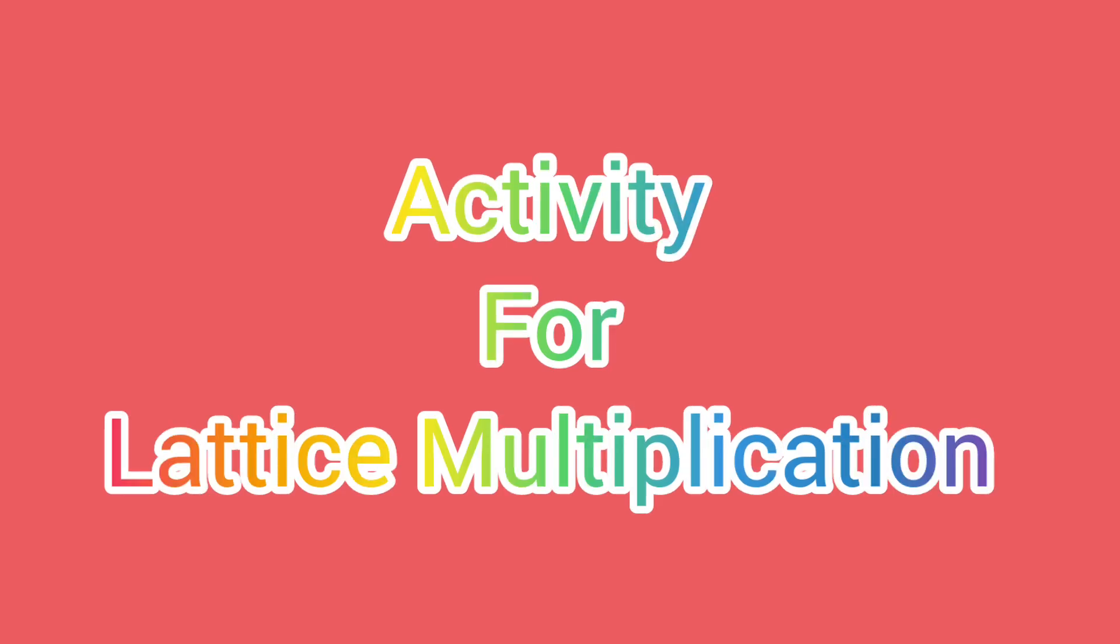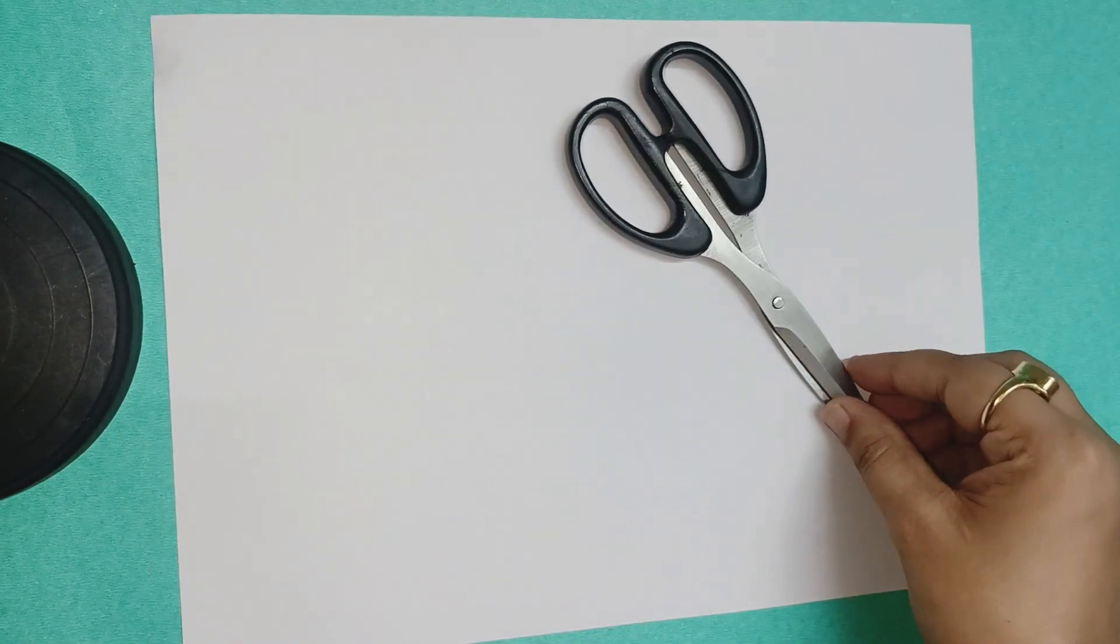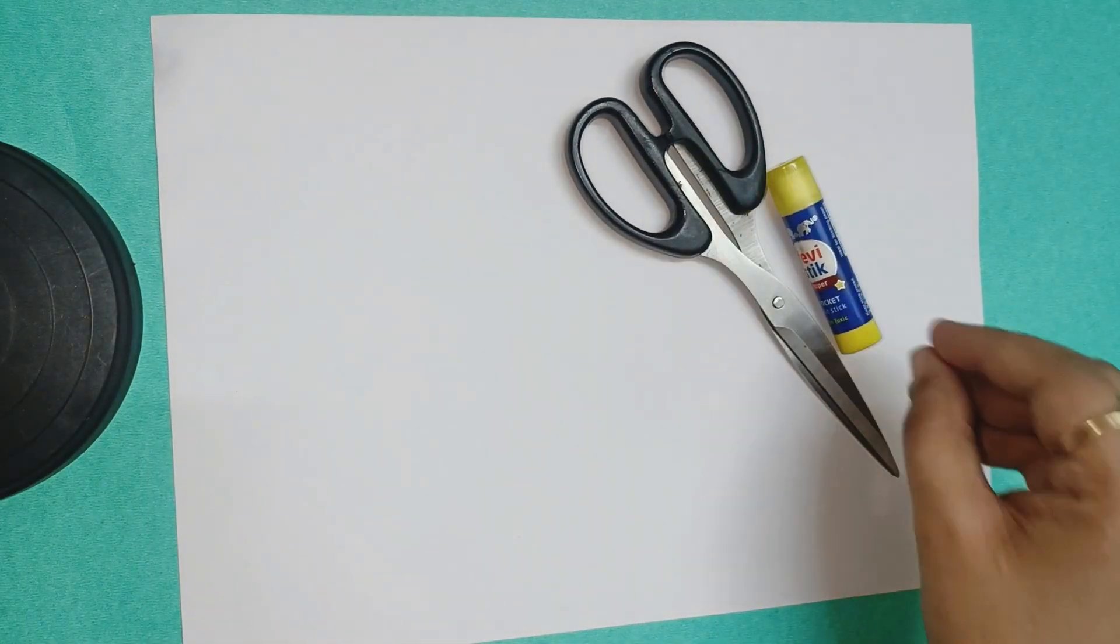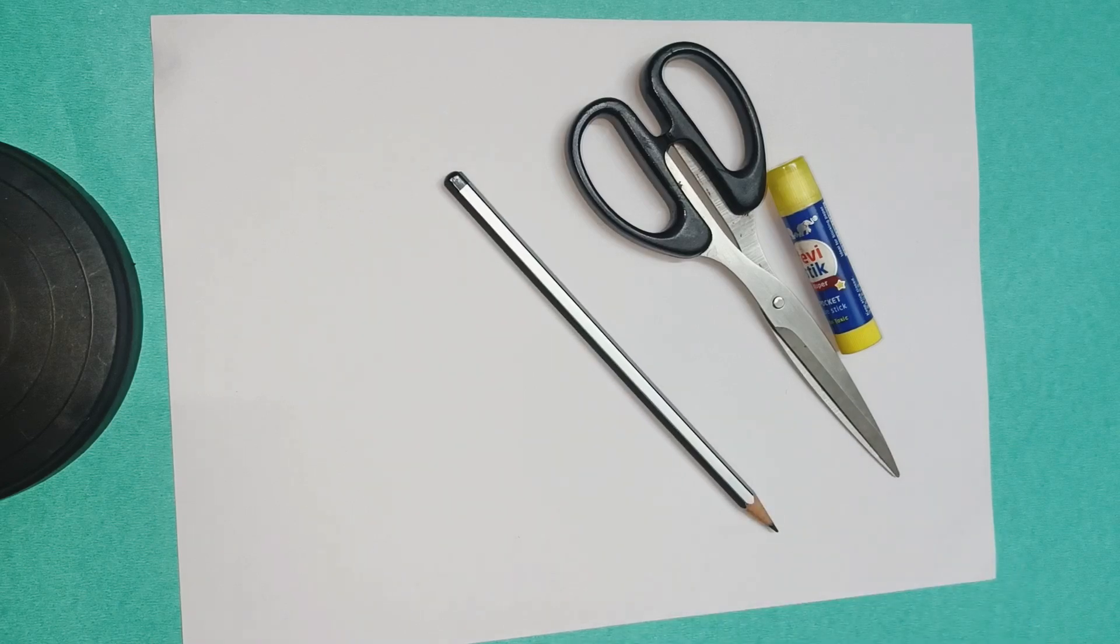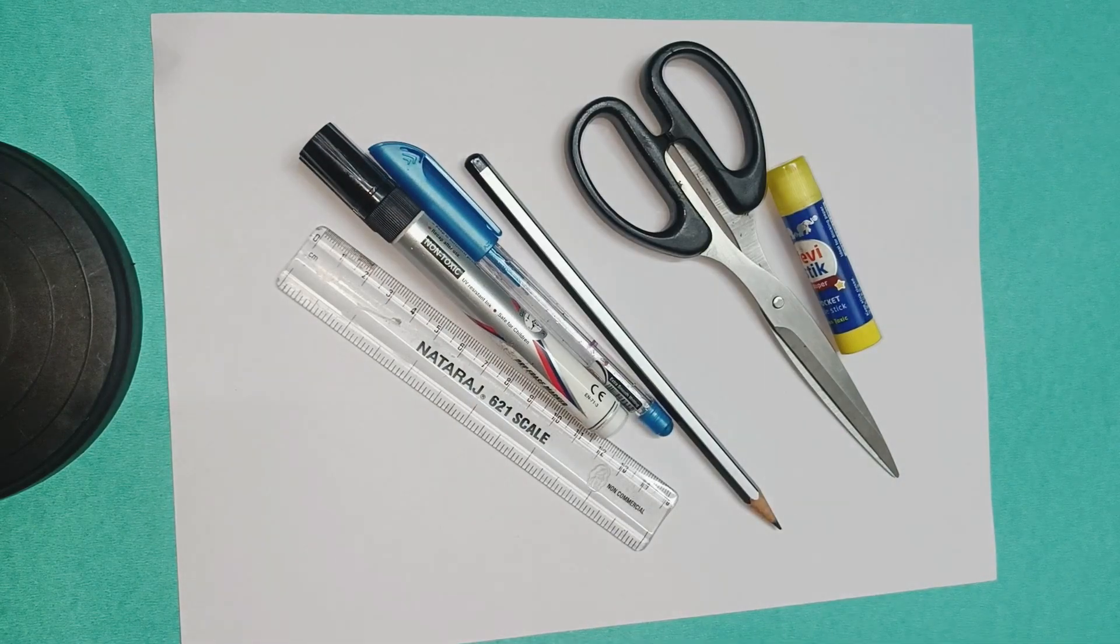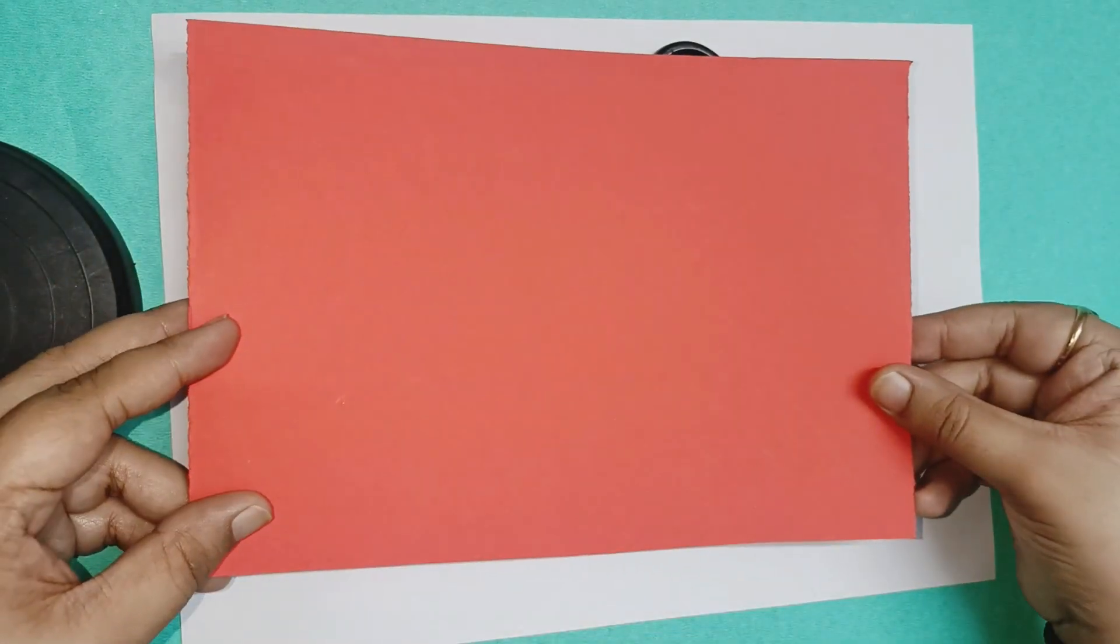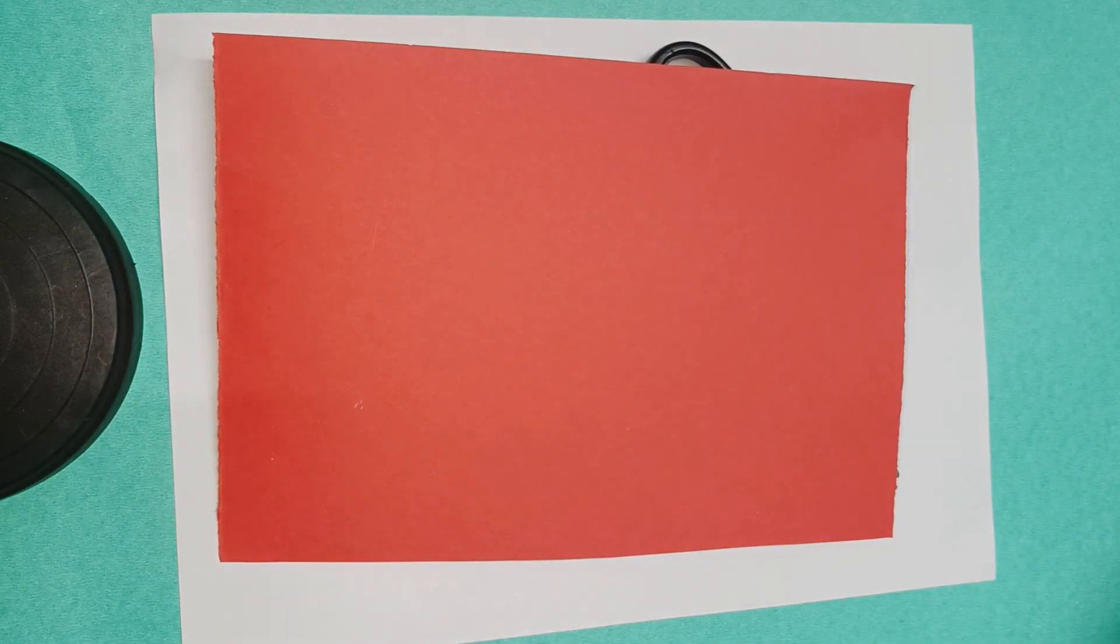Hello students, today we are going to do an activity for lattice multiplication. For this activity we need an A4 size sheet, scissors, fevi stick or fevi glue, a pencil, a ruler, colored pens, and one colored sheet. You can also use origami sheet instead of chart paper if you want.